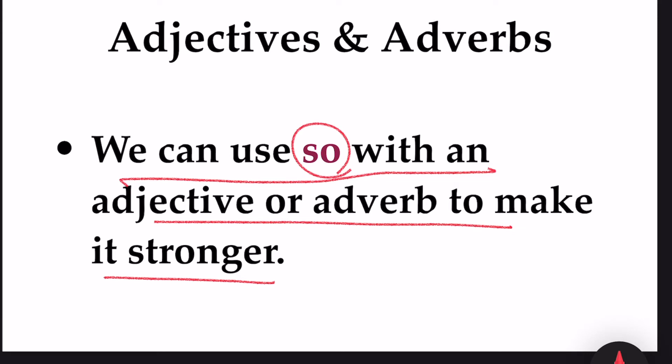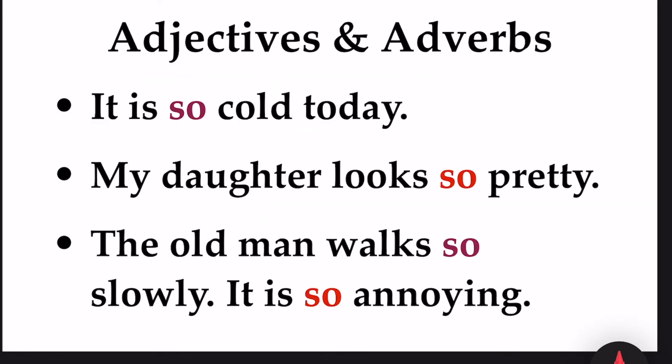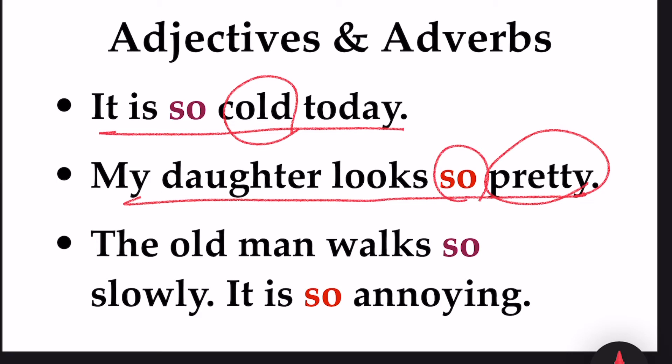So is used with adjectives and adverbs. Look at the example here. It is cold today. Cold is an adjective. My daughter looks so pretty. Here pretty is an adjective and we used so before pretty. The old man walks so slowly. Slowly is an adverb. Before the adverb, we have used so. It is so annoying. Before adjective, we have used so.